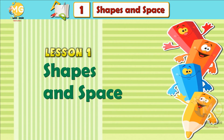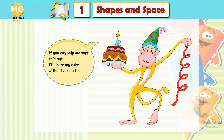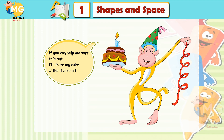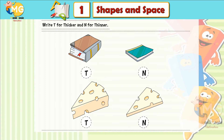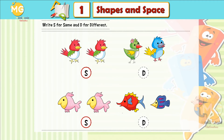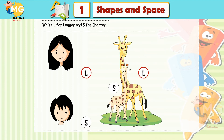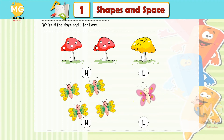Lesson 1: Shapes and Space. Let's look at the world around us. If you can help me sort this out, I'll share my cake without a doubt. Write capital B for bigger and S for smaller. Write T for thicker and N for thinner. Write H for higher and L for lower. Write S for same. Write D for different. Write L for longer and S for shorter. Write M for more and L for less.